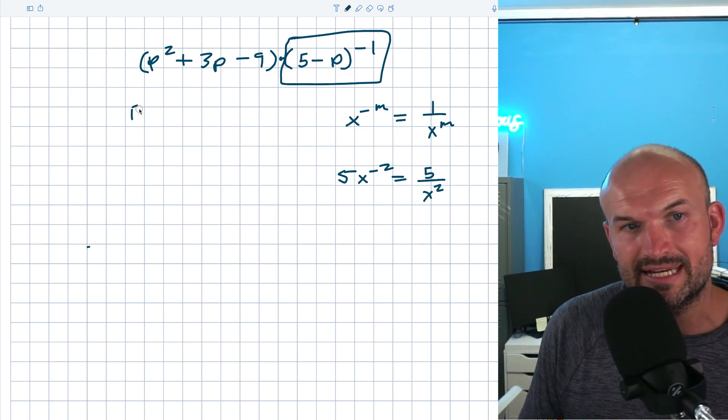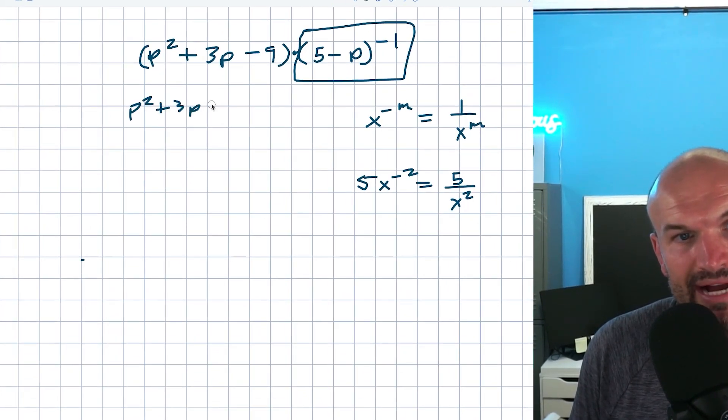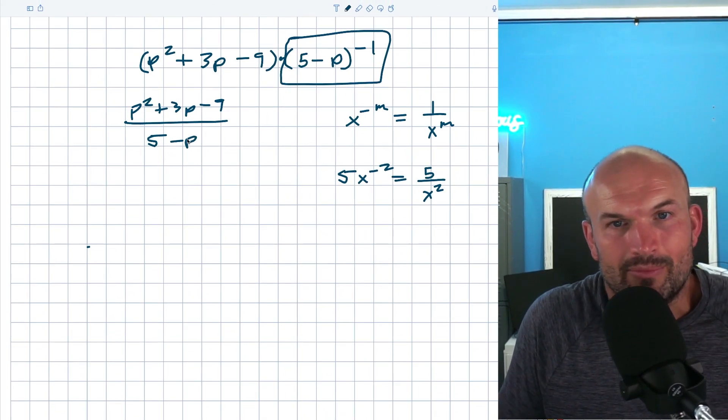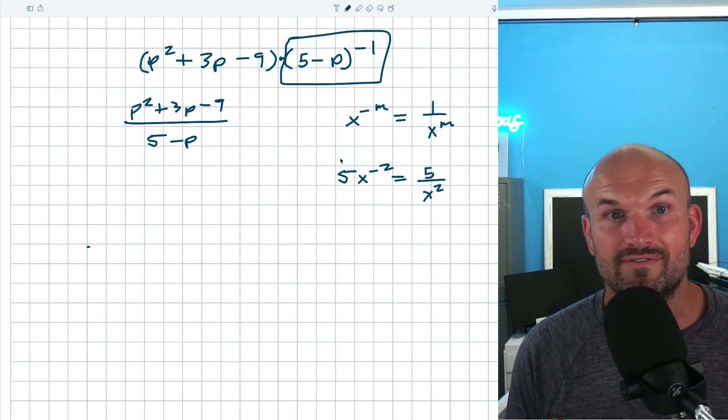So the real way I want to be able to write this is p squared plus 3p minus 9 divided by 5 minus p. Again, you can write that to the positive power or just leave off the power because it's just a 1.